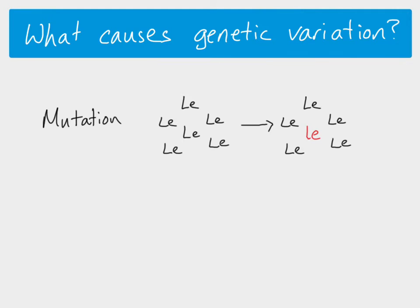Mutation is the only thing that can introduce new alleles, but there are many other things which cause differences between individuals in terms of which combinations of alleles are present. For example, crossing over at meiosis and independent assortment of chromosomes during meiosis cause different combinations of alleles. Random mating and random fusion of gametes also contribute, so all of these can cause genetic variation.